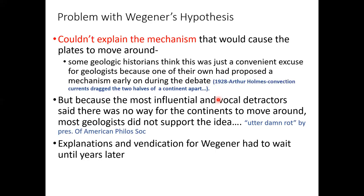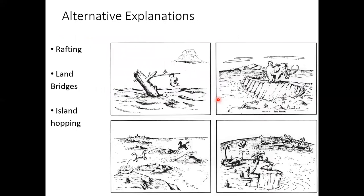Tired of the criticism, Wegener went back to his own discipline of meteorology and climatology. He was especially interested in the Greenland ice sheet, and that's where he died — never knowing what an influence he would have in earth science. You can't pick up a geology book now without a chapter dedicated to Alfred Wegener. The alternative explanations at the time were things like animals rafting across oceans on logs, which is implausible.